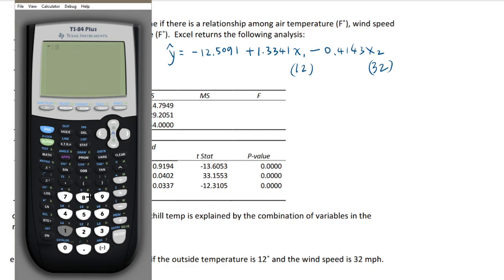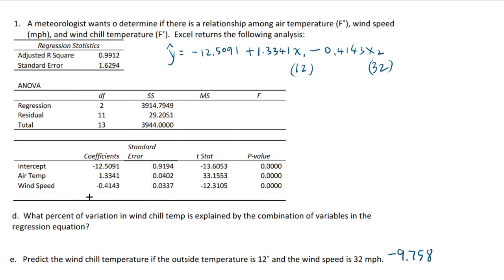So you have negative 12.5091 plus 1.3341 times 12, then minus 0.4143 times 32, and you get negative 9.7575. Usually they ask for three decimal points, so let's write it as negative 9.758. This is the wind chill temperature in Fahrenheit. What this means is that if the temperature is 12, it's already well below freezing, but with high winds it's going to feel even worse — so that's a really cold temperature.